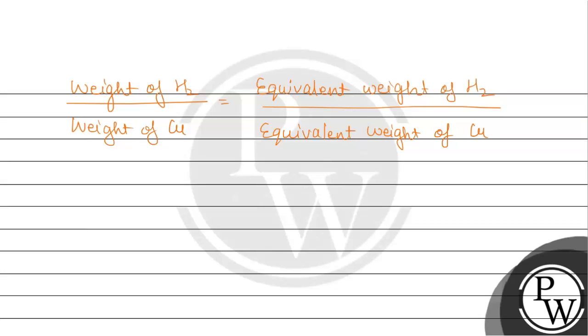Weight of hydrogen is 0.5 g divided by weight of copper. Equivalent weight of hydrogen - since molar mass is 1 and valency factor is 1, it will remain 1 only. Whereas equivalent weight of copper...